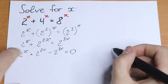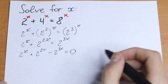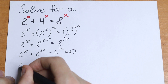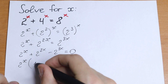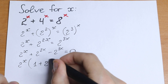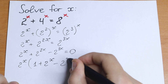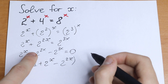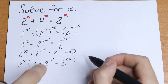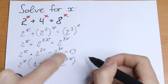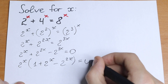Right here let's factor out 2 to the power x. What we will have? We will have 2 to the power x, and in parentheses we will have 1 plus 2 to the power x minus 2 to the power 2x, equal to 0. We take 2 to the power x as a common factor, combining the 1x and 2x exponents.